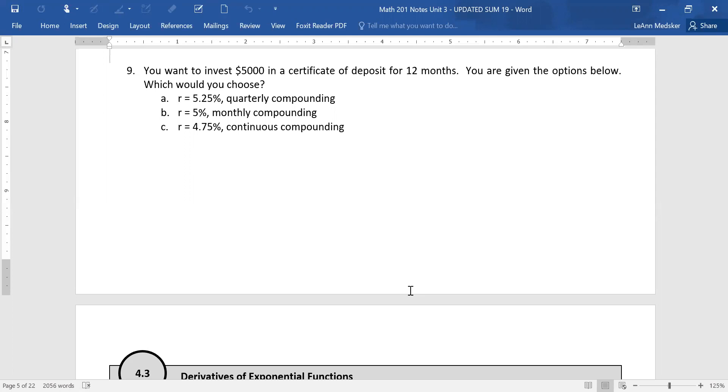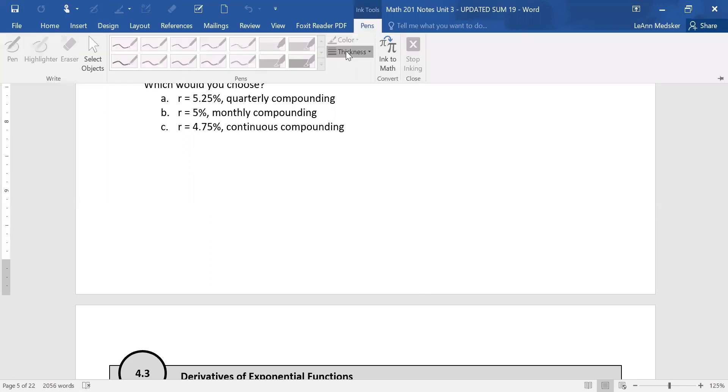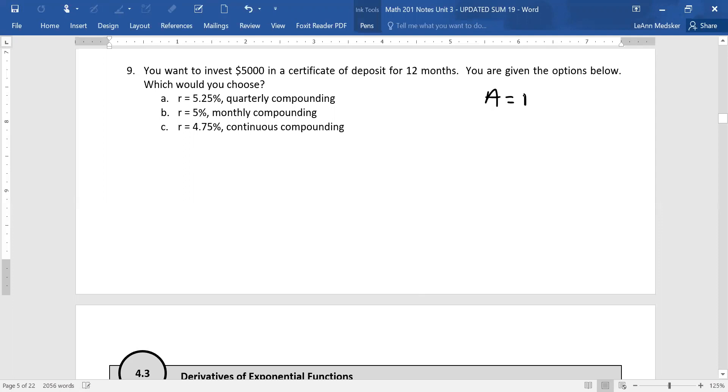Remember these were in your notes. So we need to write them both down first. We had A equals P parentheses 1 plus R over N to the NT. And we had A equals P E to the RT. Remember this one PERT was only used for continuous compounding. So that'll be for part C.